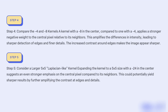Step 5: Consider a larger 5x5 Laplacian kernel. Expanding the kernel to a 5x5 size with -24 in the center suggests an even stronger emphasis on the central pixel compared to its neighbors. This could potentially yield sharper results by further amplifying the contrast at edges and details.